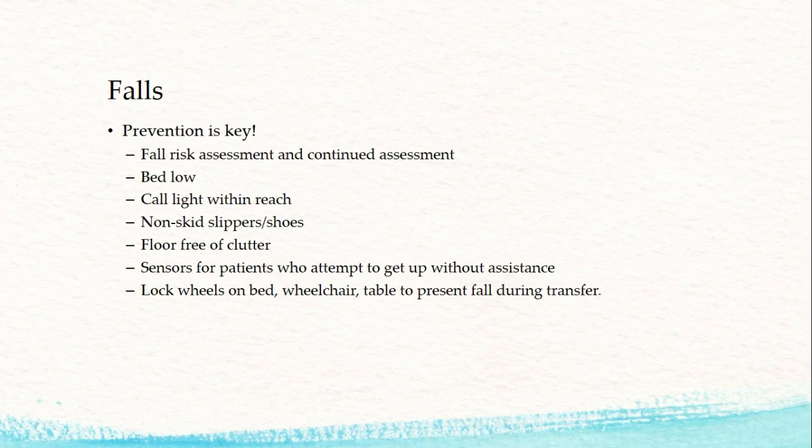Obviously, always reassessing your patients is very important — prevention is key. Fall risk assessments and continual assessment, have the bed low, call light within reach, non-skid slippers or shoes, floor free of clutter, sensors for patients who attempt to get up without assistance, and lock wheels on beds, wheelchairs, or tables to prevent falls during transfer. These are just some recommendations; chapter 4 goes into more detail.